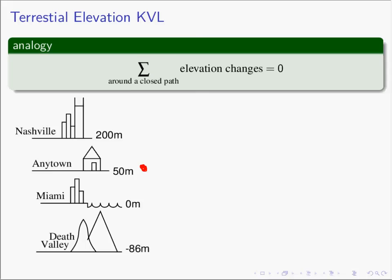We are going to leave Anytown and we are going to hike to Death Valley. What is our change in elevation from Anytown to Death Valley? Well, we went up a negative 136 meters — to go from Anytown to Death Valley we went up negative 136 meters. Now we are going to leave Death Valley and hike to Nashville. From Death Valley to Nashville we actually go up in energy 286 meters.